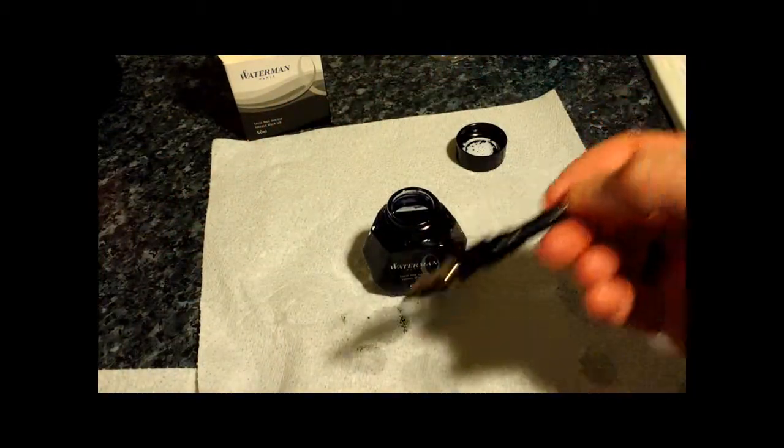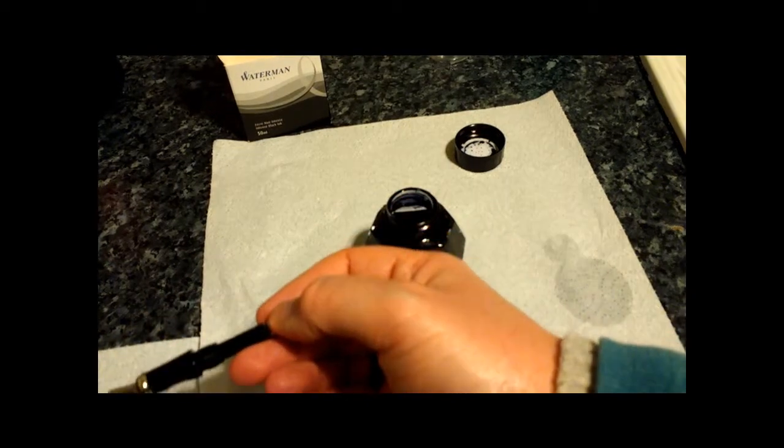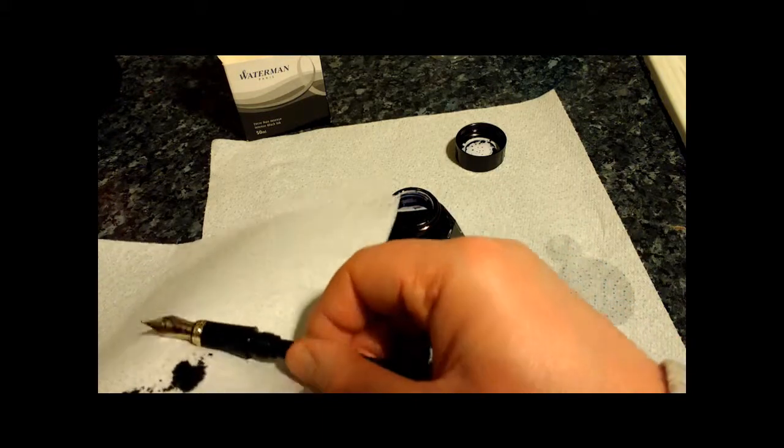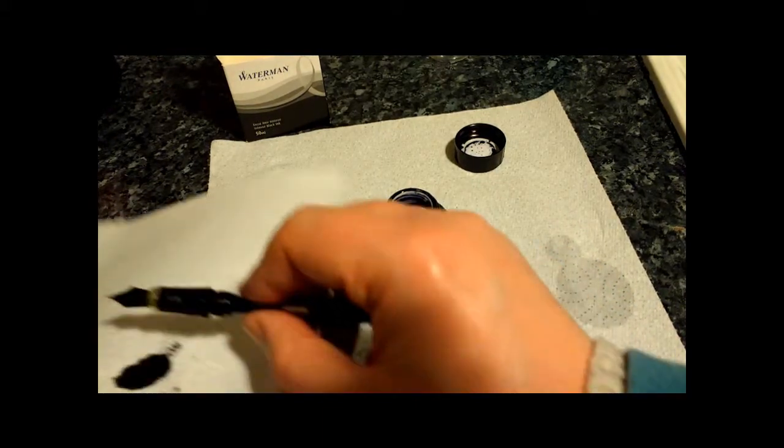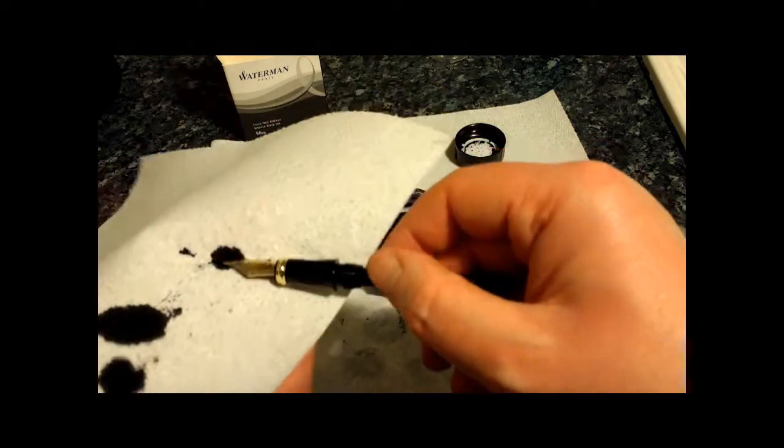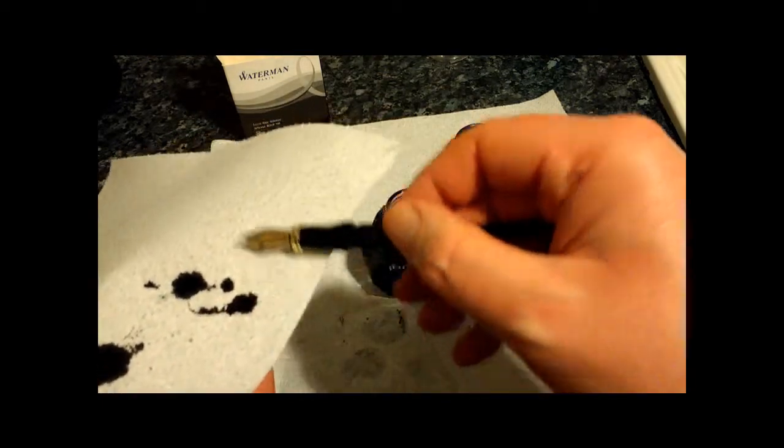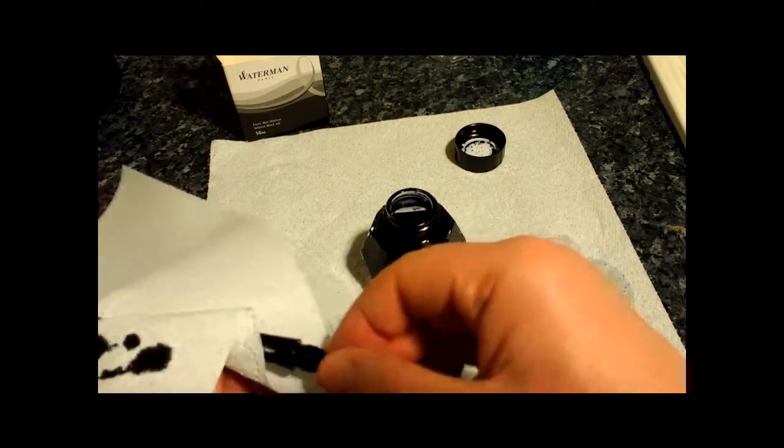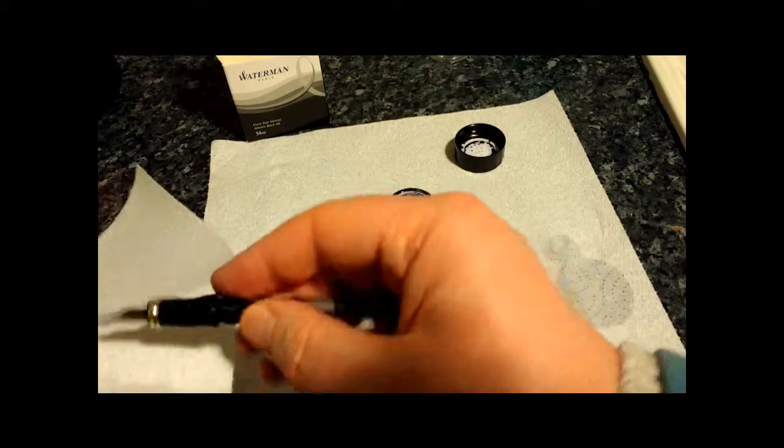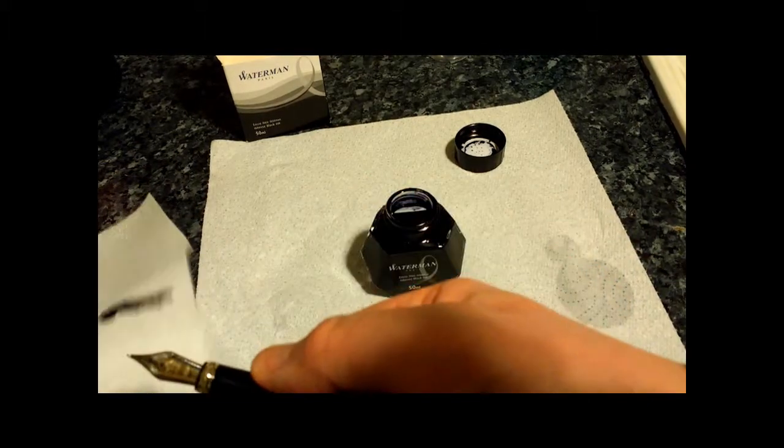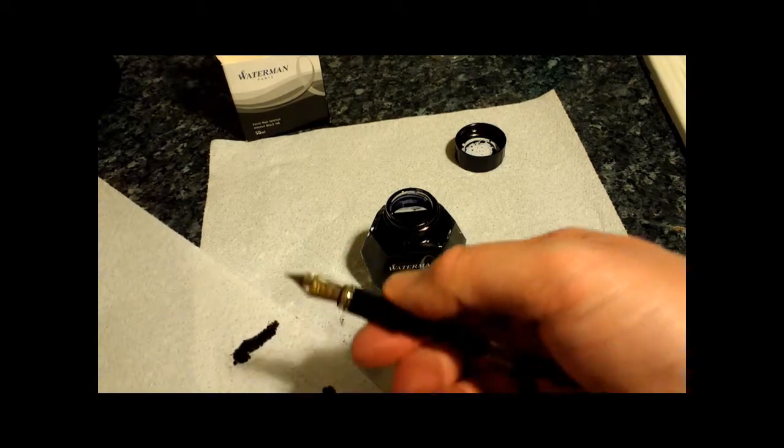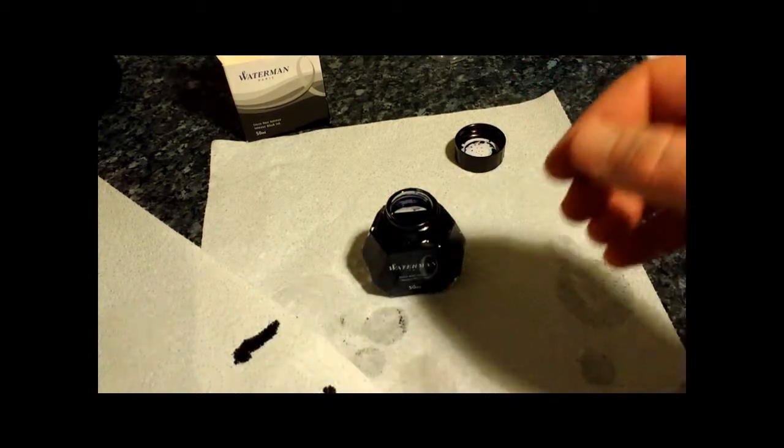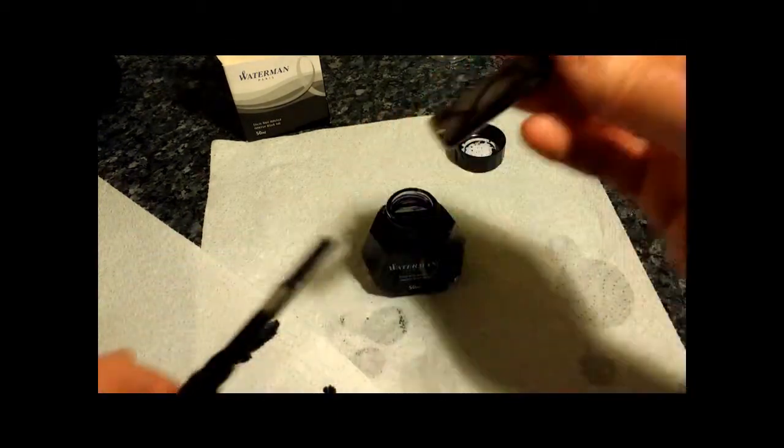So next thing to do is dab off the nib and the section. It's not a filthy process. I mean it's not absolutely awful. Yes, it's messy. And just dab it off. Yep, there we go. The ink's flowing out of there already. So give that a bit of a wipe. Wipe off, wipe off the nib. Make sure it's all nice and clean. There we go. Yes, of course you get inky fingers. This is the whole thing about using fountain pens. You get inky fingers. Nothing is wrong with having inky fingers.